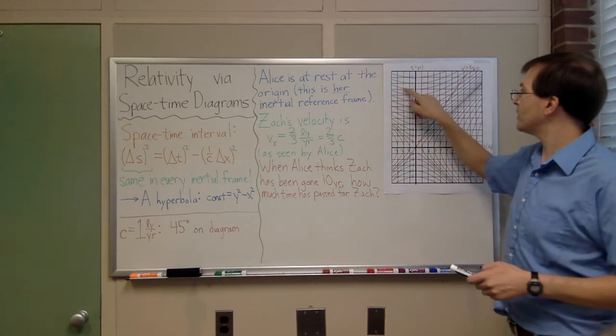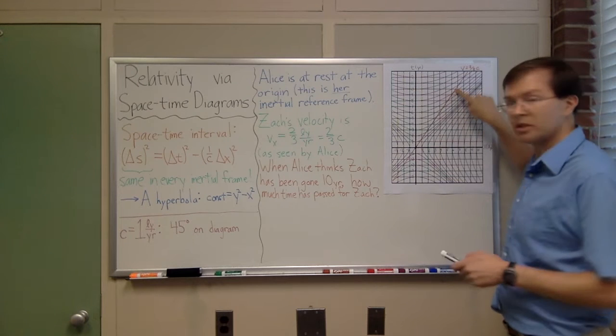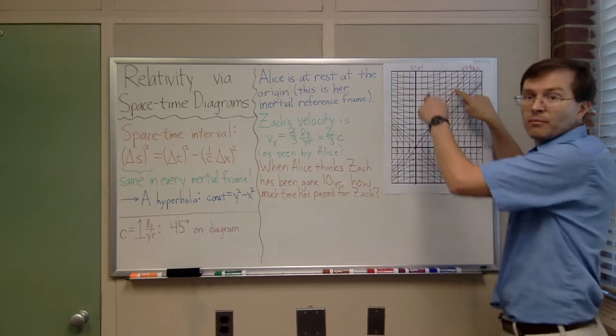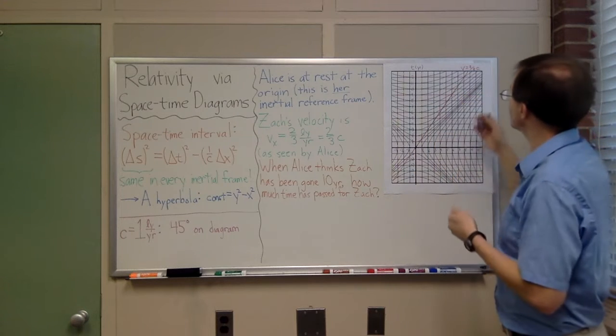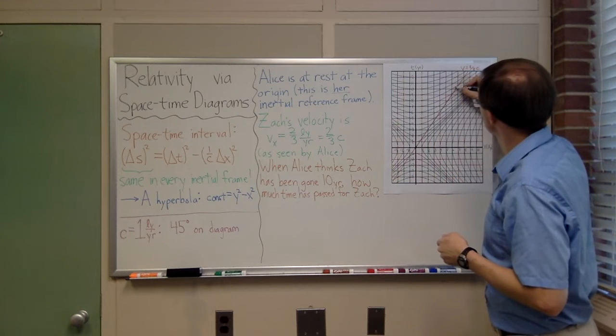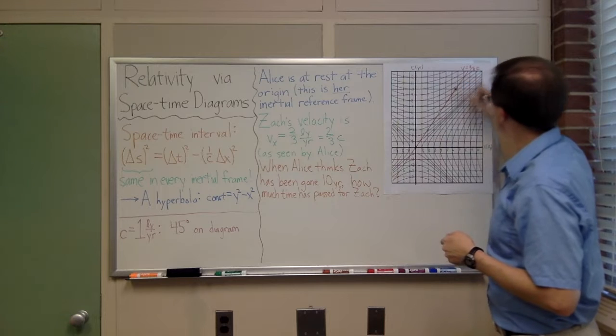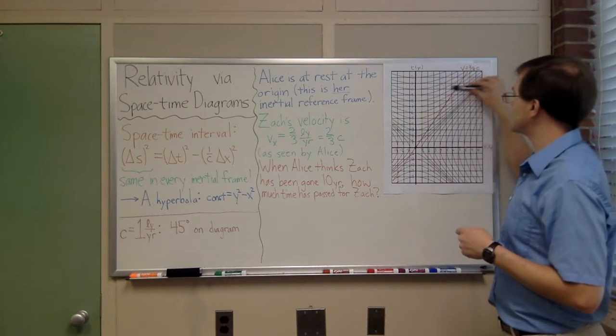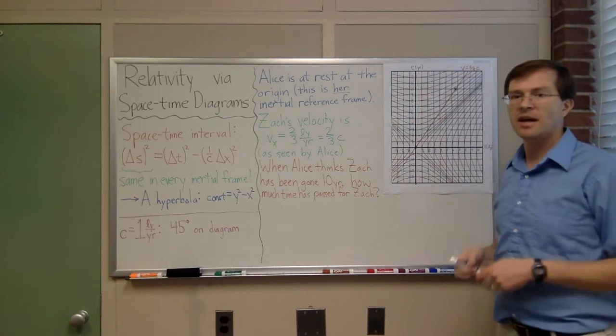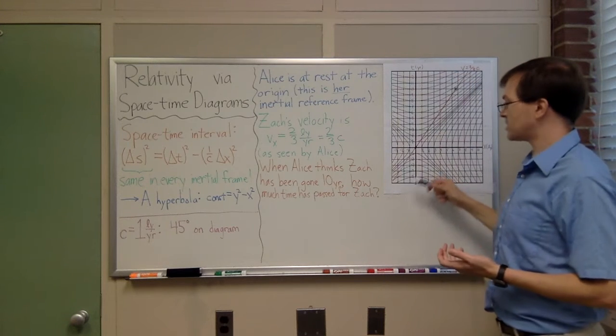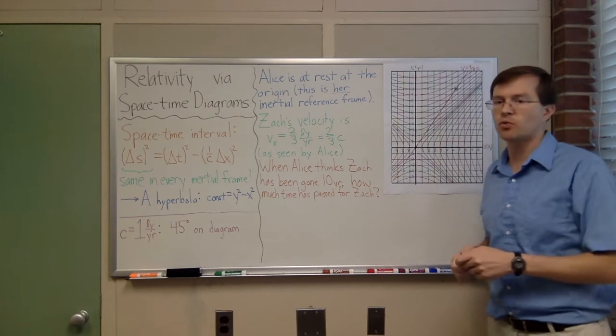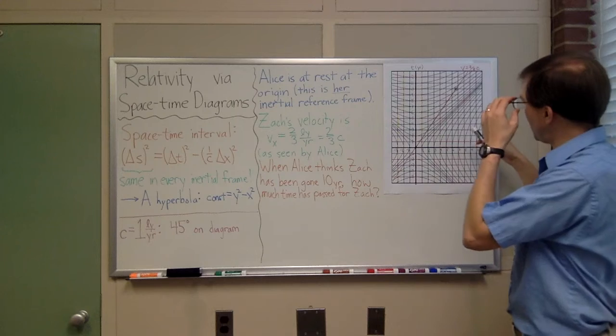So in particular, Zach is at this position, ten years after he passed by Alice, as measured in Alice's diagram, as measured in Alice's frame. So our second event is this event, right here, where Zach is at that ten-year mark as seen by Alice. And our question is, how much time has passed on Zach's own watch? How much time would Zach have measured in between?